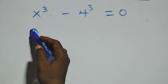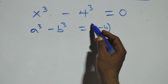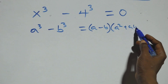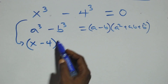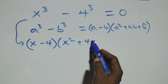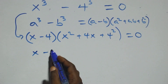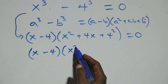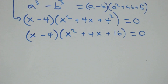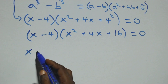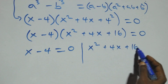Solving from the second case, this follows the identity a cubed minus b cubed equals a minus b into bracket a squared plus ab plus b squared. So we have x minus 4 into bracket open bracket x squared plus 4x plus 4 squared, that is 16, close bracket equals to 0. We again have two possible sub-cases: x minus 4 equals to 0, or x squared plus 4x plus 16 equals to 0.